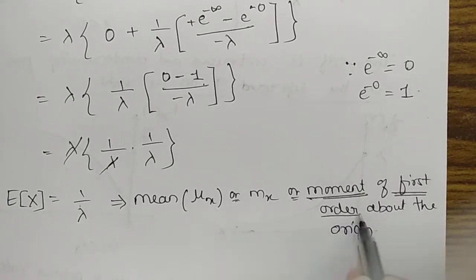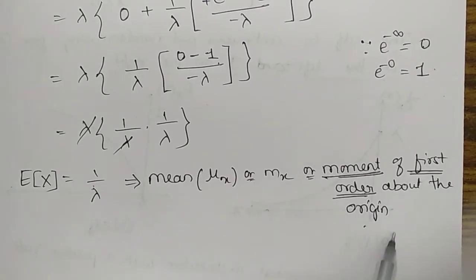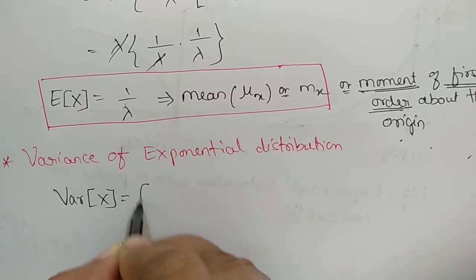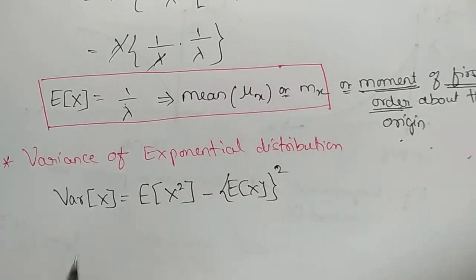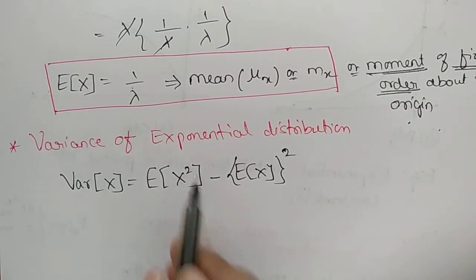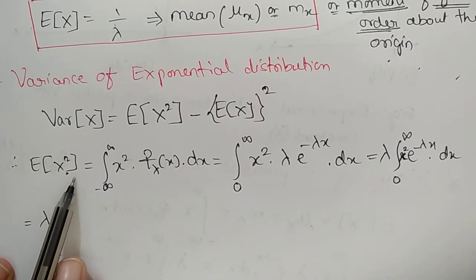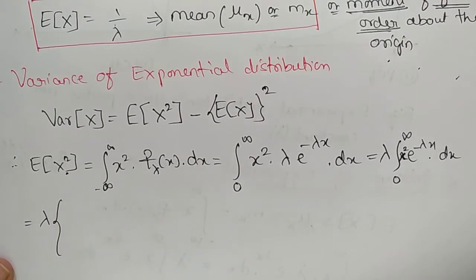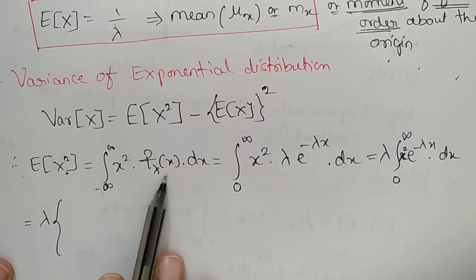The mean is also known as the average and as the first-order moment about the origin. The variance of the exponential distribution is given by Var(X) = E[X²] − (E[X])². So we first need to find E[X²], which is the second-order moment about the origin, also known as the mean square. The formula is ∫_{−∞}^{∞} x²·f(x) dx.